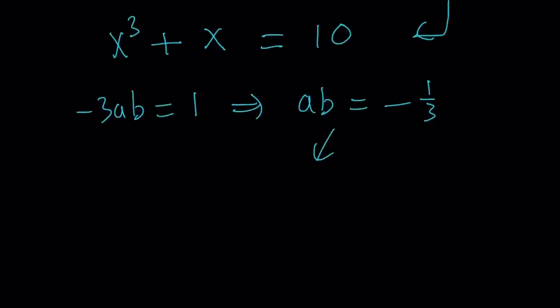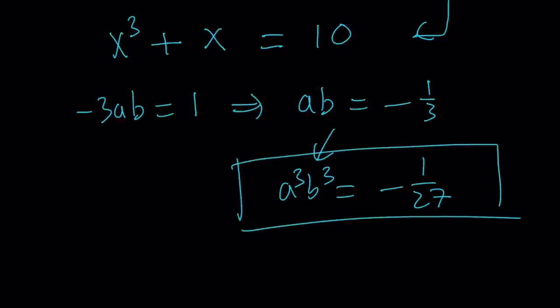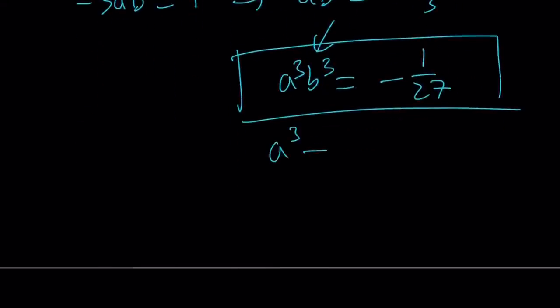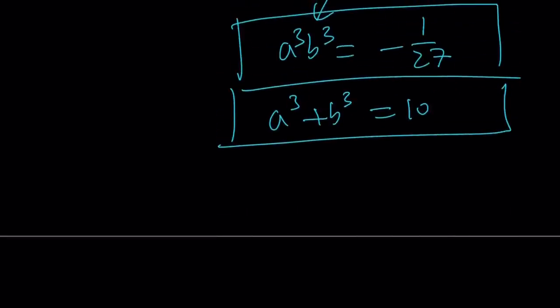If I go ahead and cube this, I get a³b³ = -1/27. So that's one of the equations that I need. And the other equation is going to come from here: a³ + b³ = 10. Now, how can I use these two equations? This is a system. It looks cubic, but it's actually quadratic.